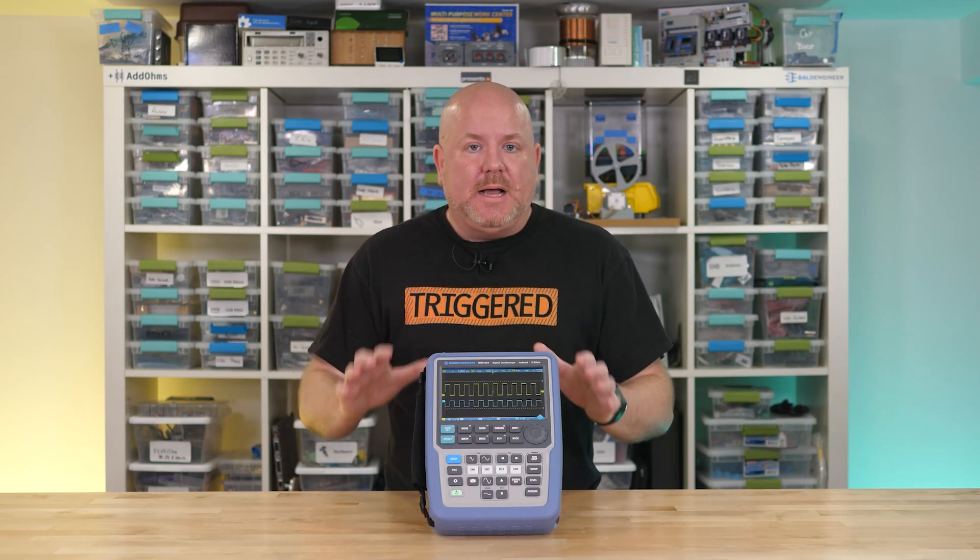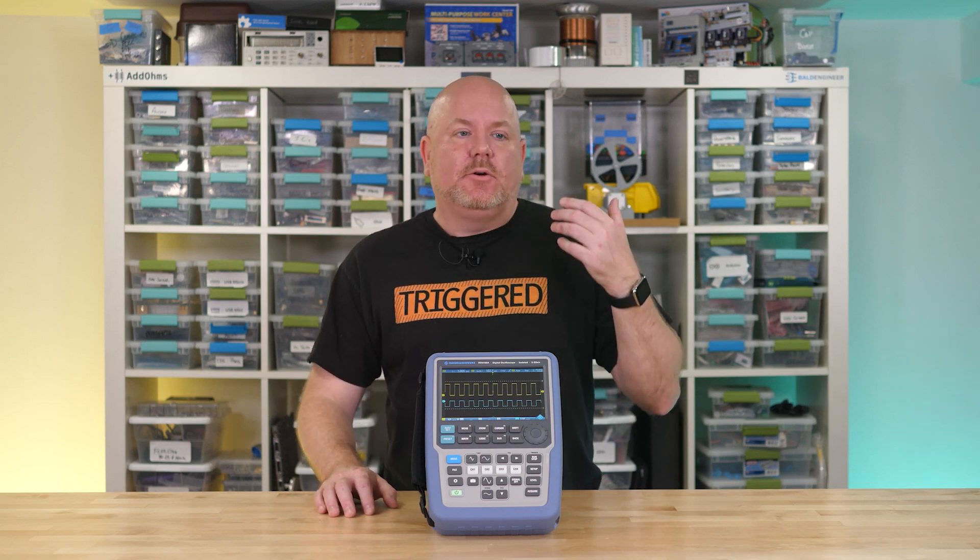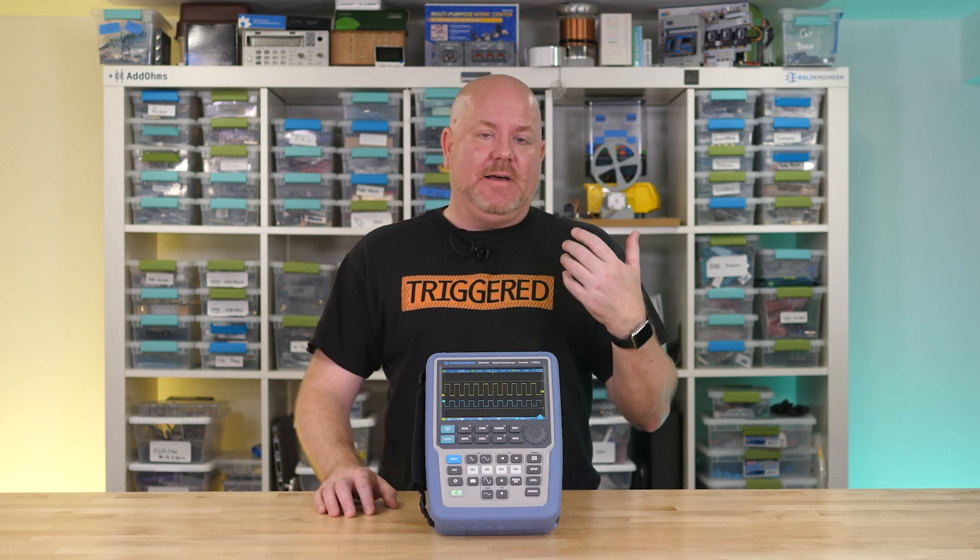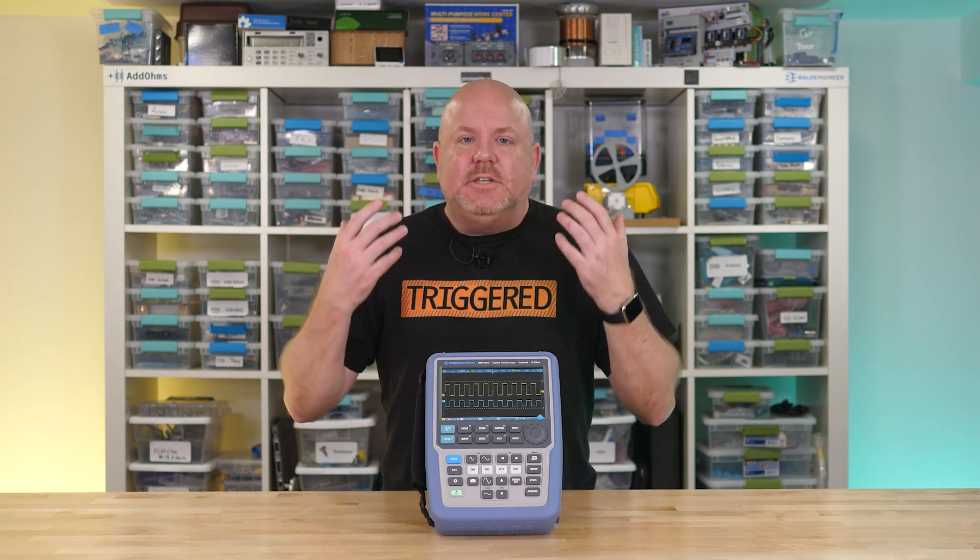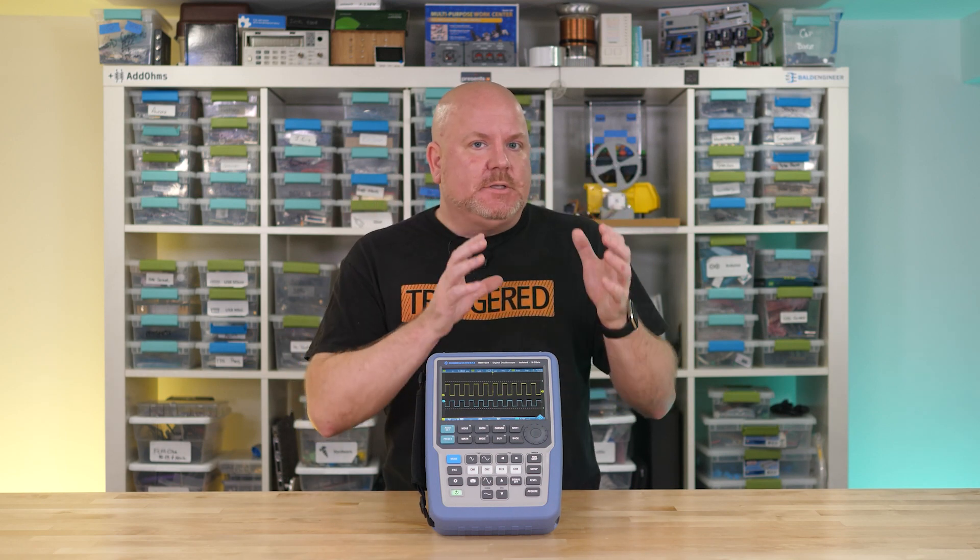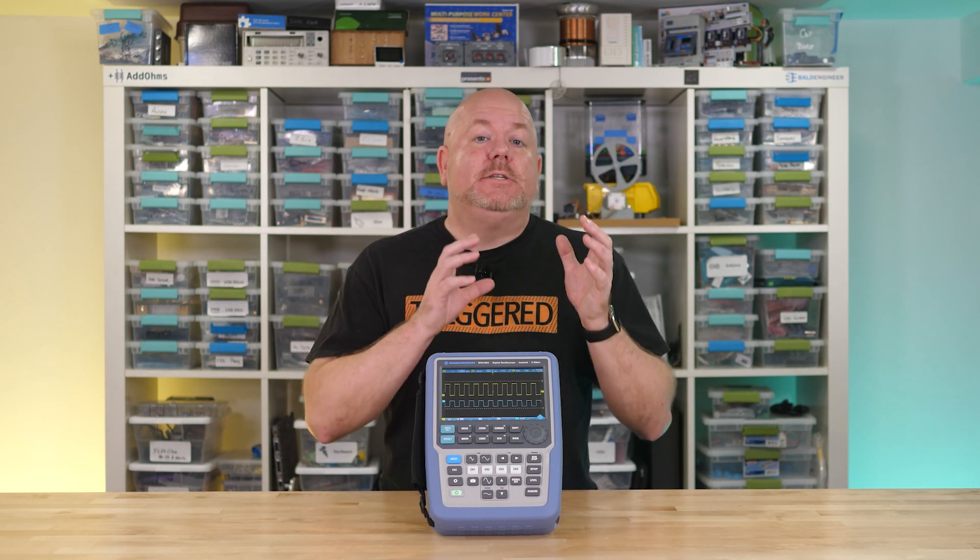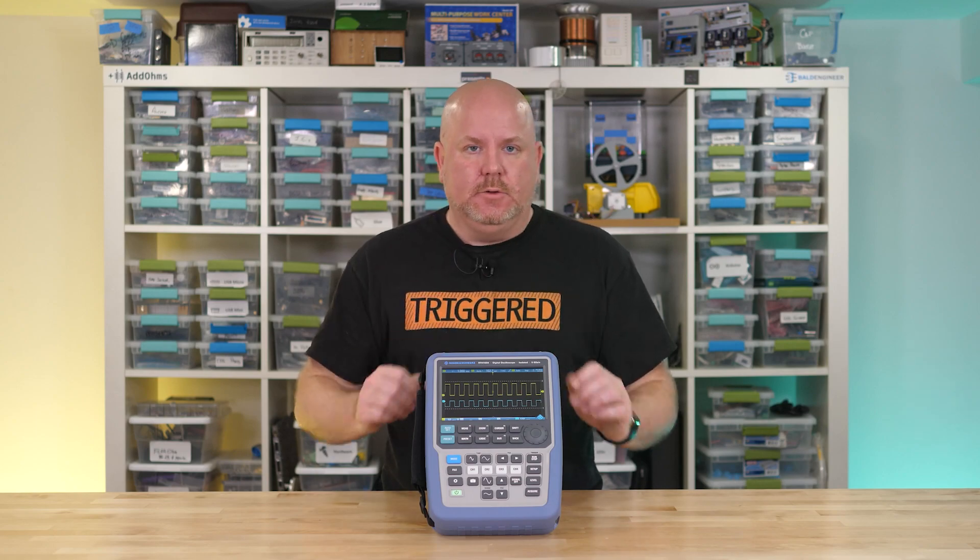Most oscilloscopes that you buy today have enough sample rate that they're going to be doing oversampling by a factor of 3, 5, or even 10. Because of that, I just want to make the point one more time, don't confuse sample rate and bandwidth. Bandwidth is probably going to be more important to determine what kind of signals your scope can look at.